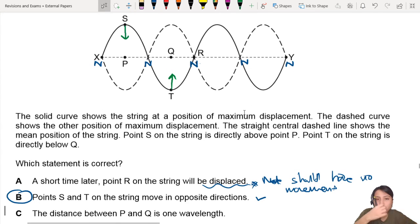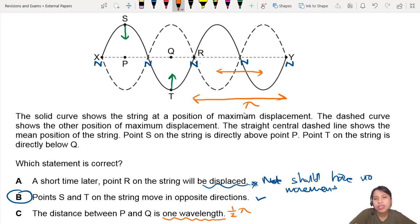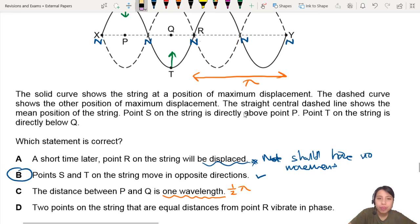C: Distance between P and Q is one wavelength. Ah, I see a problem now. Excuse me, P and Q is only half a wavelength. How do I know that? Because I'm looking at where the pattern repeats. Here to here is one wavelength. P and Q is kind of like here to here. That's half. That's not a wavelength. So let's not see. Let's put a wrong thing.